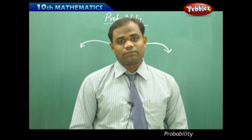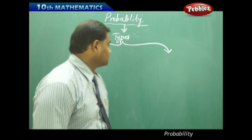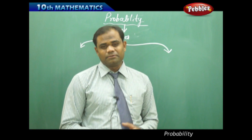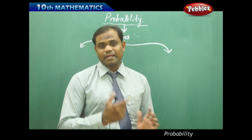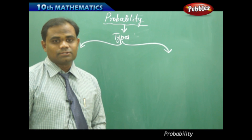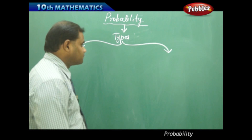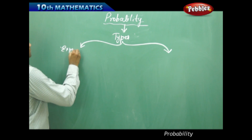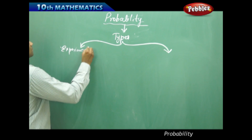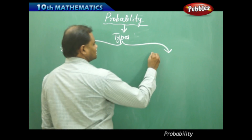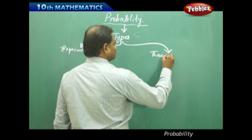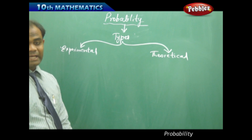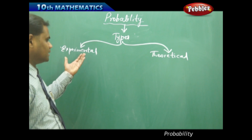Now let's see the types of probability. We have two different types: experimental probability and theoretical probability. As the names clearly define, experimental and theoretical probabilities each have a distinct meaning.